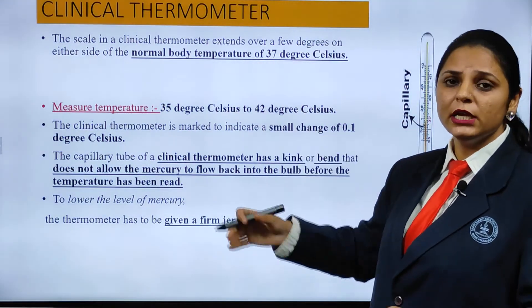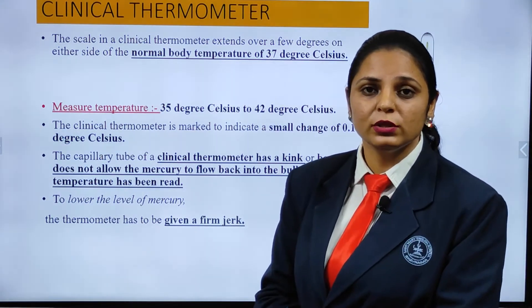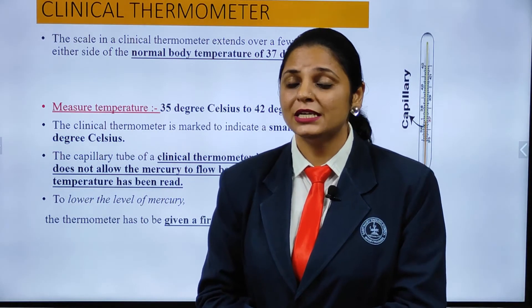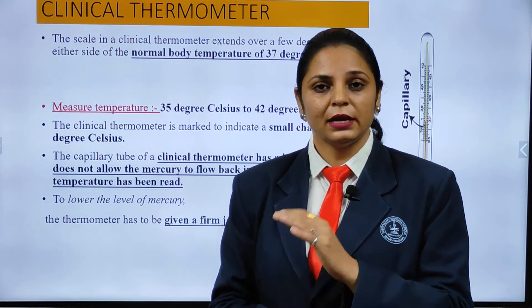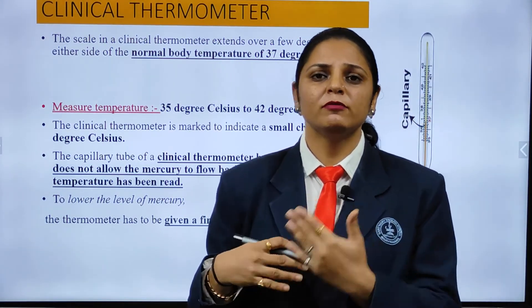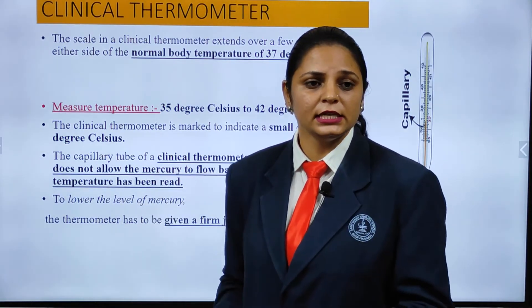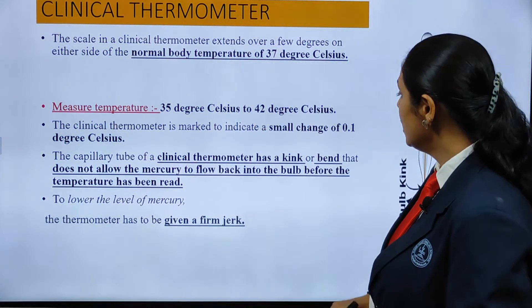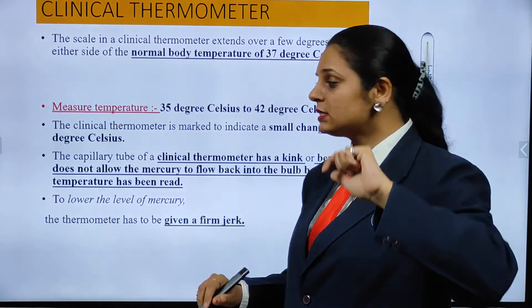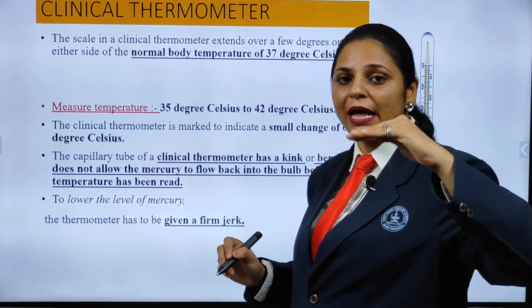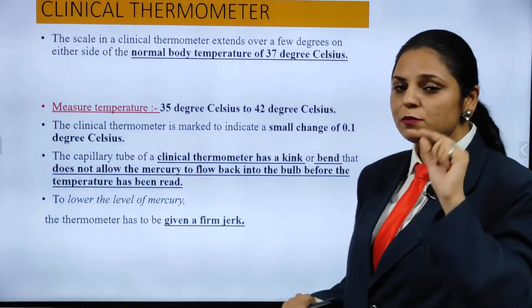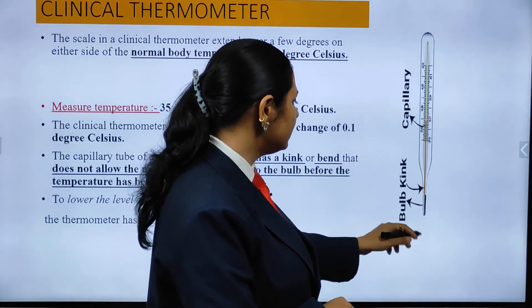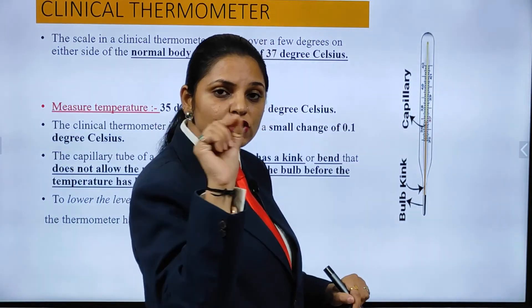The clinical thermometer is used for measuring body temperature. The human body temperature is 37 degrees Celsius on average — many people may have slightly below or above 37 degrees. The last temperature on the scale is 42 degrees Celsius. The small division between graduations is 0.1 degrees Celsius. There is also a kink — a constriction — present in the capillary tube, which I will explain shortly.